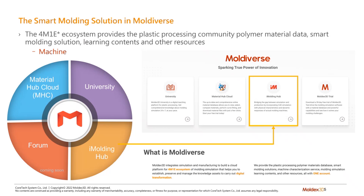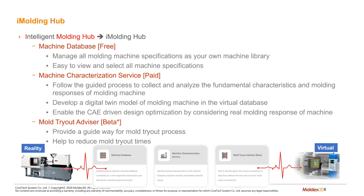This part is very important for injection molding machines — it's iMolding Hub. Intelligent Molding Hub, we call it iMolding Hub. It has functions such as machine database, machine characterization service, and mold trial advisor. These functions are designed for machine digital twin: to collect and analyze the fundamental trajectory and molding response of a molding machine.